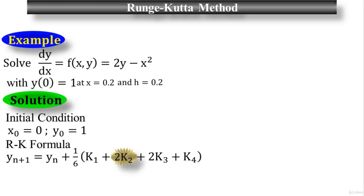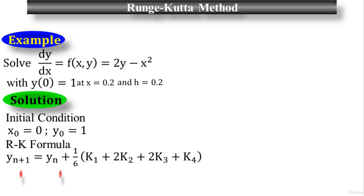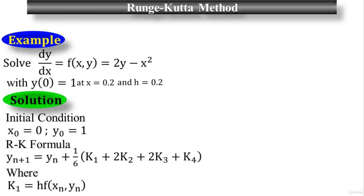1/6 is the average of all four stages, because 2k₂ and 2k₃ give 4k, so in total there are 6 k's, and the average is 1/6. y_n is any integer. The formula for k₁ is h times f(x_n, y_n).